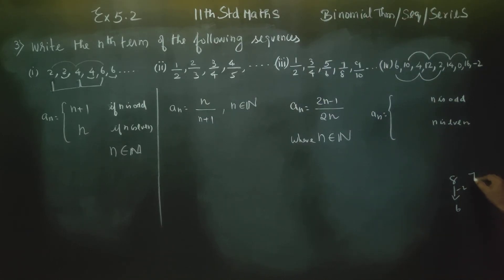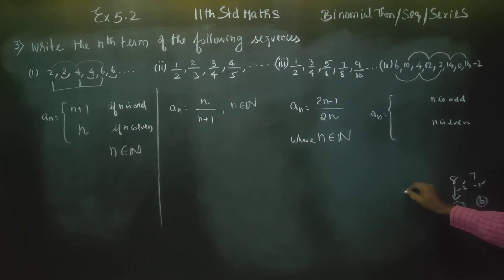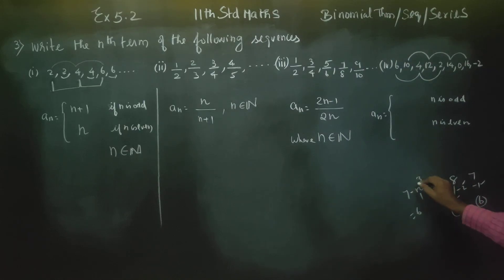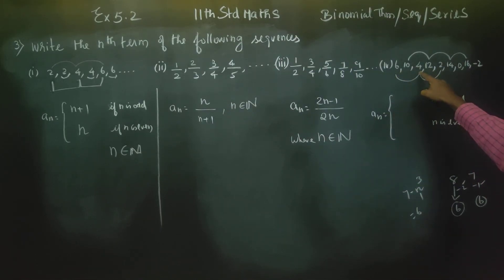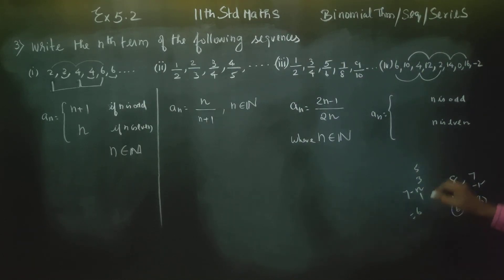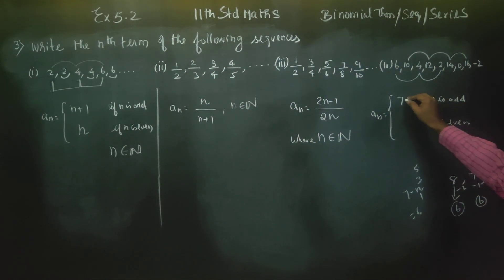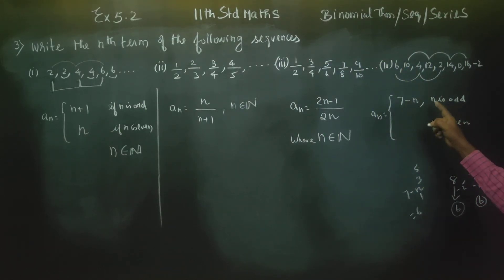Then 6 minus 0. With the formula 7 minus n: when n is odd, n equals 1 gives 7 minus 1 equals 6; try n equals 3, then 7 minus 3 equals 4; try n equals 5, then 7 minus 5 equals 2. So the first term equals 6 and the answer will be 7 minus n.